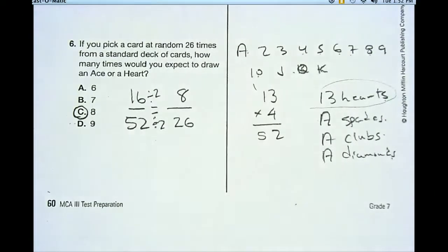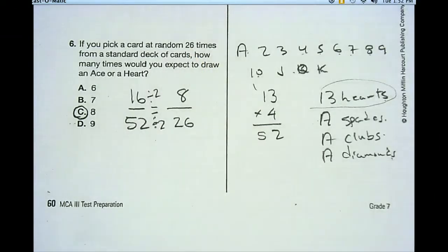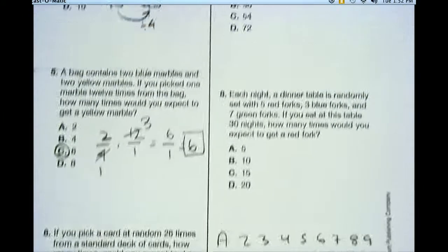And that's one way you could do it. There's other ways that you could do it. But it worked out kind of neatly, because 26 is half the number of cards in the deck. So I just took half the number of cards that were aces or hearts in a deck of 52, and I got my answer. Just 8, just half of 16.